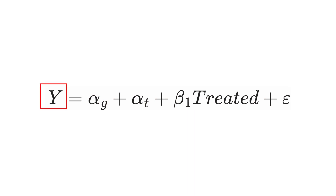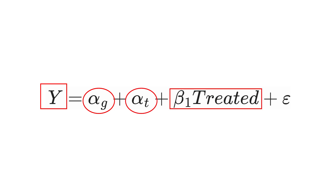This leads to the two-way fixed effects regression: Y regressed on a group fixed effect alpha_g, a time fixed effect alpha_t, and a variable 'treated' equal to one if you're in a treated group in a post-treatment period. The group fixed effect ensures within-group variation. The time fixed effect subtracts out shared time effects estimated from the control group, leaving beta 1 as the treatment effect. You can cluster standard errors by group, which is common practice.